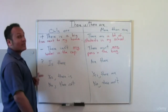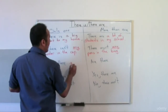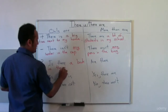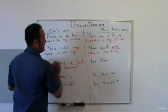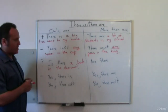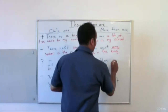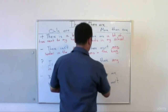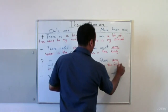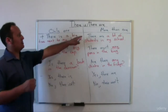Now for questions. 'Is there a book in the classroom?' — one book, so we use 'is there'. And for plural, we can also use 'any': 'Are there any drinks in the fridge?' That's a question for more than one.